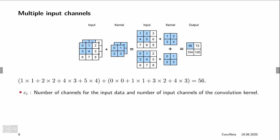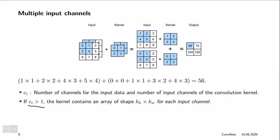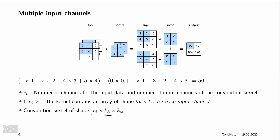Now if we do that, if CI is the number of channels of the input data in a convolution, then our kernel also gets an additional dimension. So if the kernel height and the kernel width is the size of the kernel, then we actually introduce a kernel of the same size CI many times. So we introduce CI times KH times KW many parameters, yielding a kernel of shape CI times KH times KW.